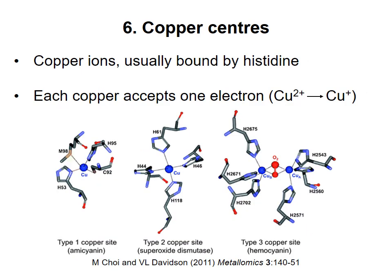The final type of electron carrier is copper centers. These are similar to iron-sulfur centers, in that a metal ion is coordinated by atoms in a protein in a number of possible ways. Different side chains can coordinate copper, but histidine is very common in copper centers. In copper centers, each copper ion can accept an electron. This is different from iron-sulfur centers, in which only one electron is accepted no matter how many iron ions are present. So a two-copper center could pick up two electrons at the same time, one electron on each copper.